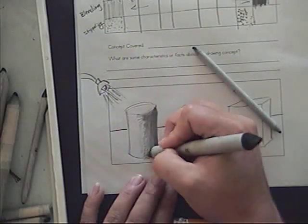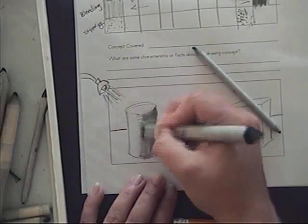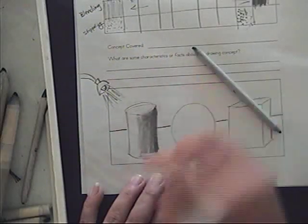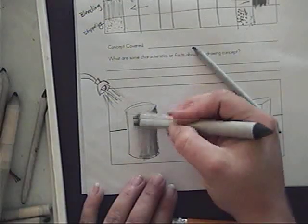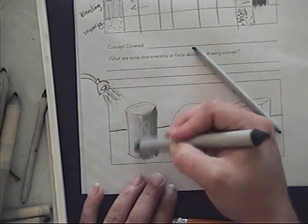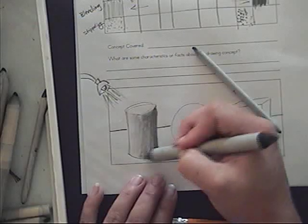So I'm going from dark, dark, dark, bringing it over here to my light. And I want you to watch, even in the places that I didn't go on, now I'm using the blending stump very lightly. And it creates a value.